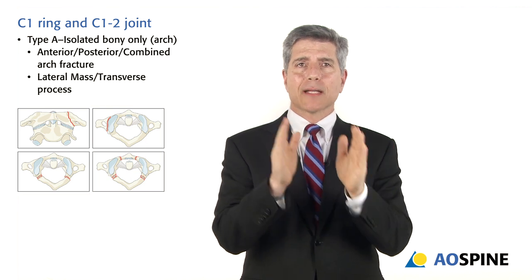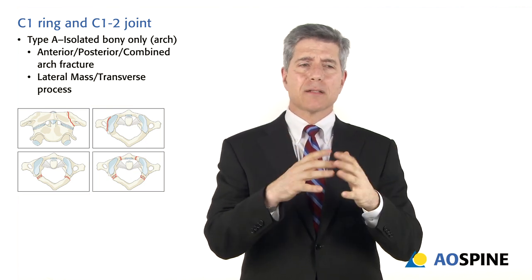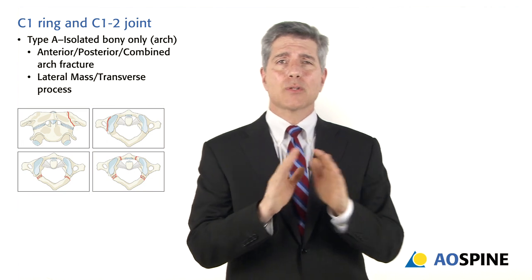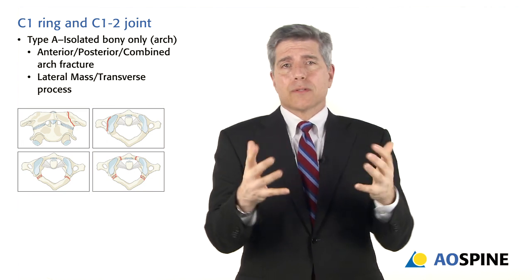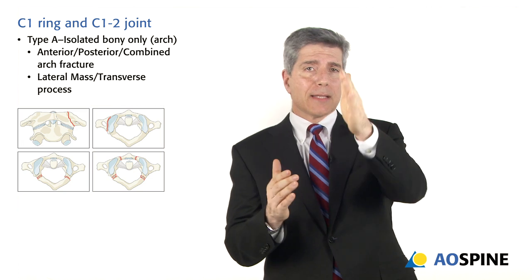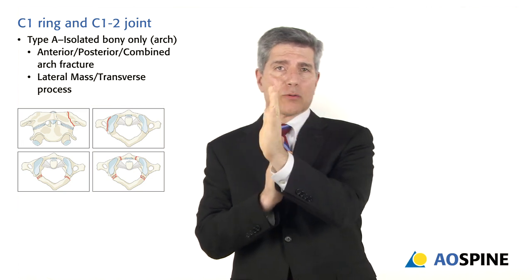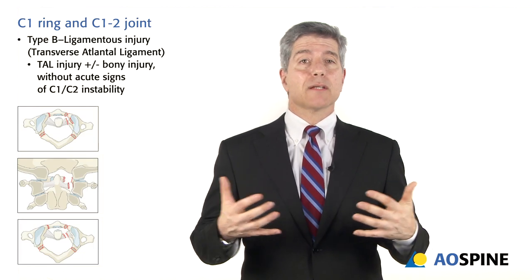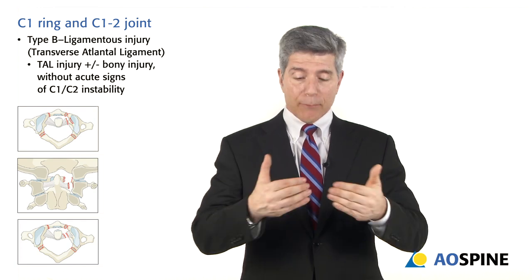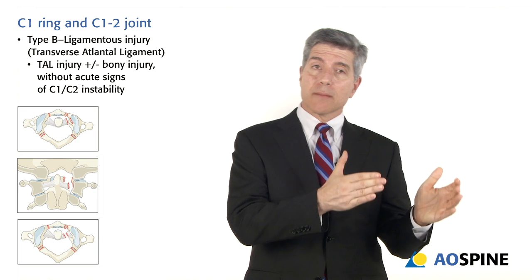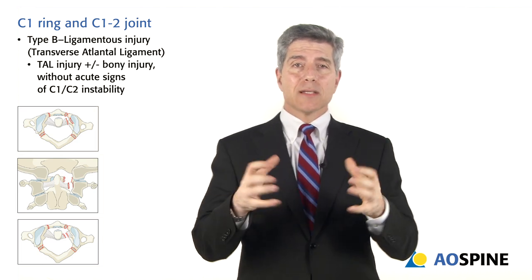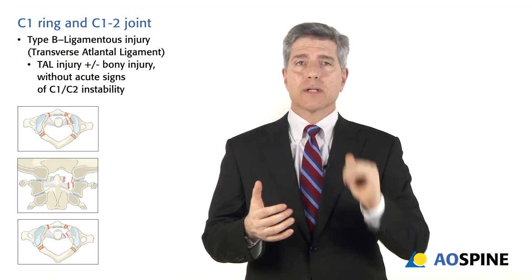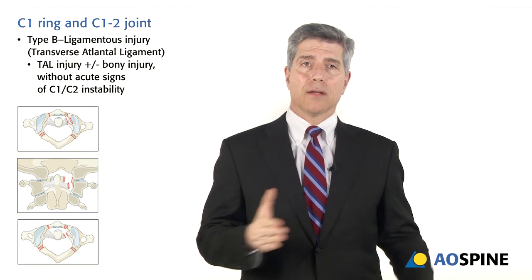Category two: C1 ring and C1-2 joint. In the past, atlas classifications had four, seven, or even eleven types. Now it's simple. Type A is just a bony injury — anterior arch, posterior arch, or lateral mass — with no significant ligamentous disruption. Type B is a transverse ligamentous injury; it doesn't mean it's unstable. A mid-substance tear is potentially unstable, and we have modifiers for that. It can avulse bone or not — call it type B and subclassify.